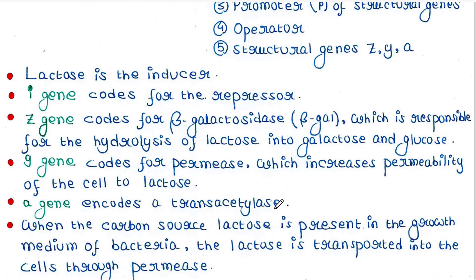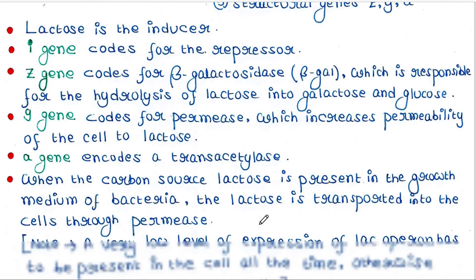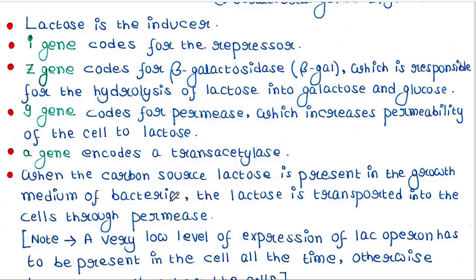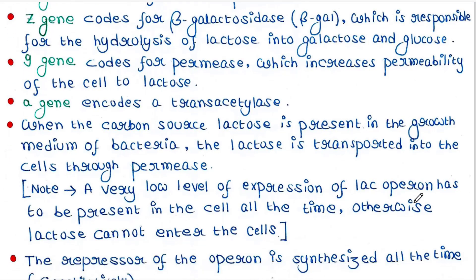When the carbon source lactose is present in the growth medium of bacteria, it is transported into the cells through permease. A very low level of expression of the lac operon must be present in the cell at all times, otherwise lactose cannot enter the cells, since a small amount of permease should always be present to help lactose enter the cell.